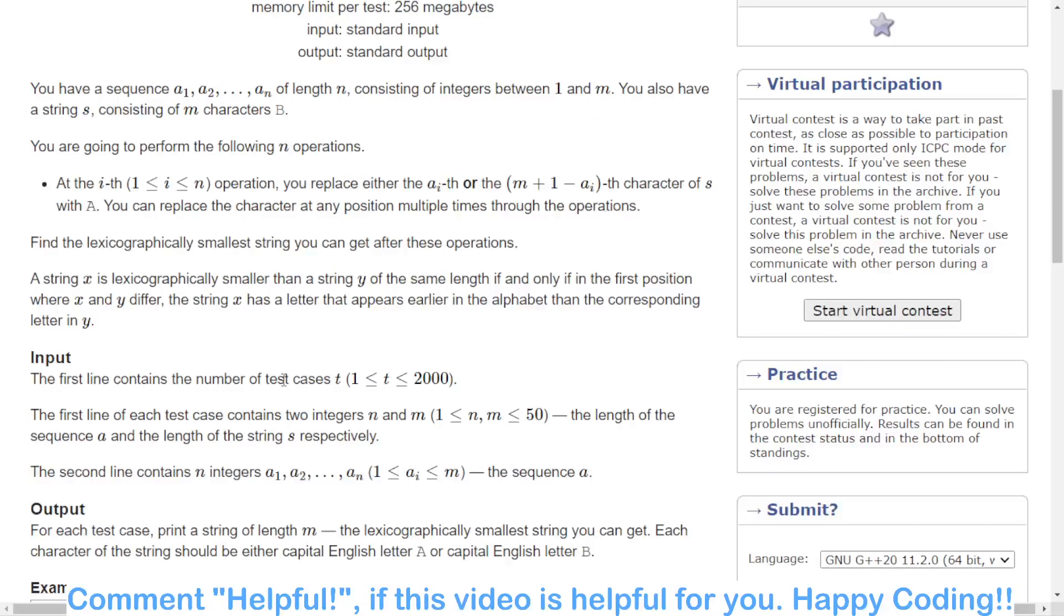In one operation, we can take the ith value from this array and we can either change the ith element or m plus one minus ith element, basically the ith element from the back of that string s. By doing this operation, we have to make that string lexicographically small.